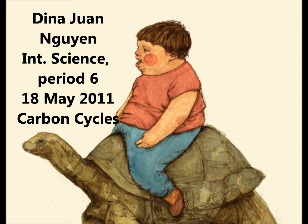Photosynthesis, respiration with starch — with plants taking in CO2. With the energy they make carbohydrates, animals eat these, then they breathe carbon dioxide, which is CO2, returning to the atmosphere, thus completing a carbon cycle.